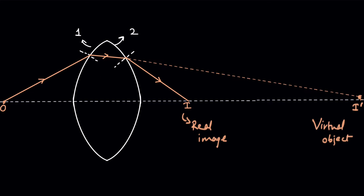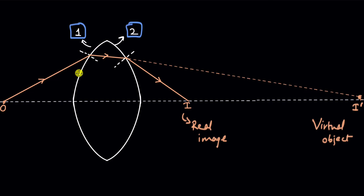Looking at these two refracting surfaces, we can draw a general principle. There are at least two steps: the first interface and the second interface. The image from the first interface could never really be formed because the second interface came in between. Whenever this happens — whenever the image of the first optical element is not formed — that point acts as the virtual object for the next refracting surface.